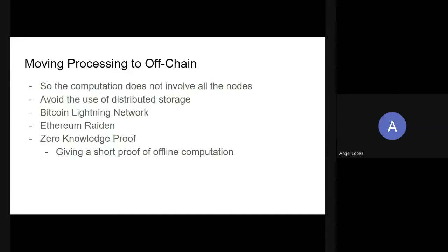The idea of zero knowledge proof came from many decades ago from cryptography and logic, and now it can be used in blockchain and Ethereum especially to solve the scalability problem. ZCash for example is a blockchain totally based on zero knowledge proof since the beginning. We also need to add to our virtual machine new operations to support some cryptographic elliptic curve operations to support zero knowledge proof processing.